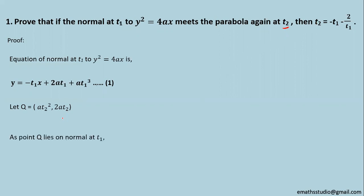Now this point Q lies on normal at t₁. So I am substituting these coordinates of point Q in equation number 1. I got it as 2at₂ = -t₁ · at₂² + 2at₁ + at₁³.